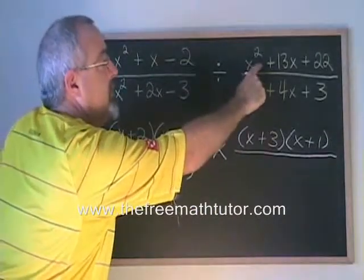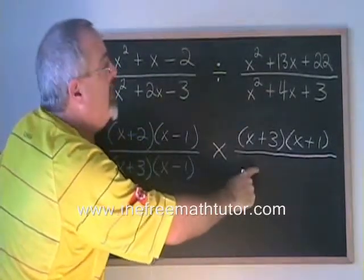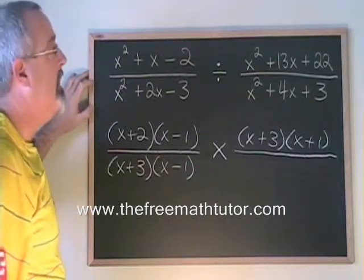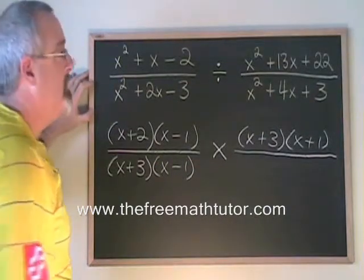And now finally this numerator will go down here. What two numbers multiply to give 22 and add to give 13? They are positive 11 and positive 2.